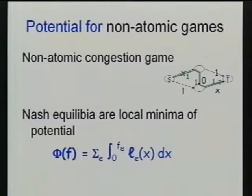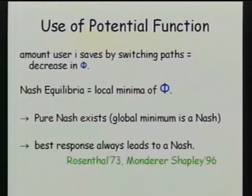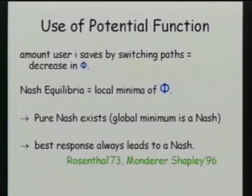Potential functions have traditionally been used by Rosenthal to argue that pure Nash equilibria exist. If you minimize the potential function, that minimum is a pure equilibrium — if someone wanted to move, the potential function would decrease, but it's already at a minimum. Alternatively, repeated best response gets you a Nash equilibrium in the discrete setting: it decreases the potential function until it can't decrease anymore, reaching a pure Nash equilibrium.